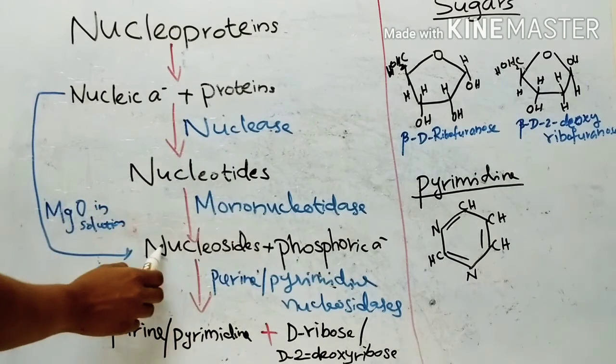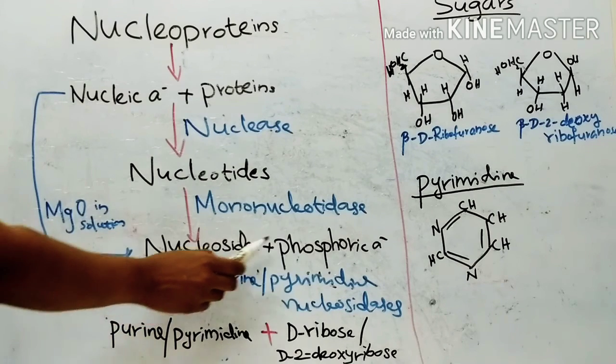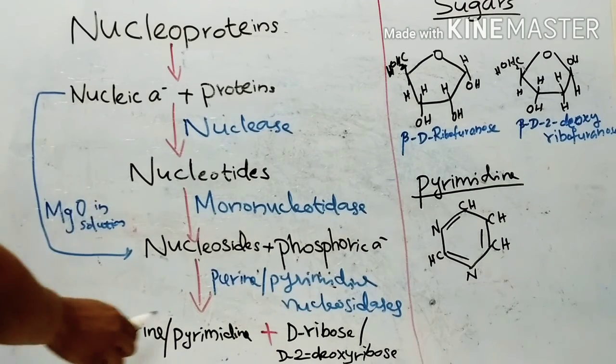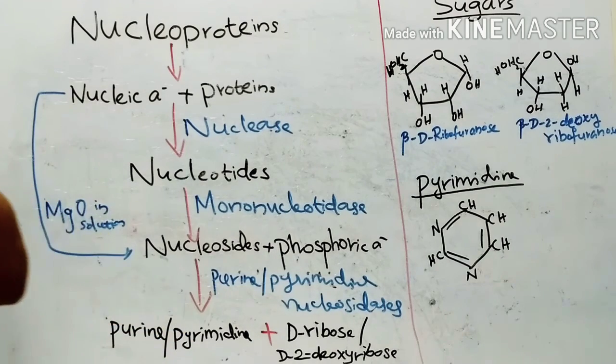Then mononucleotidases will give nucleosides and phosphoric acid. And in the end, nucleosides and phosphoric acid in the presence of purine or pyrimidine nucleosidases will give purine or pyrimidine and D-ribose or D2-deoxyribose.